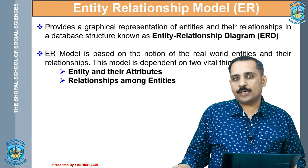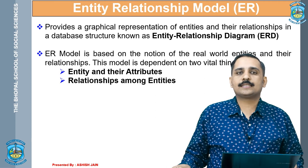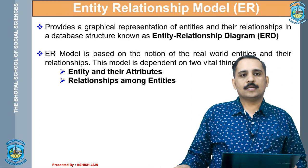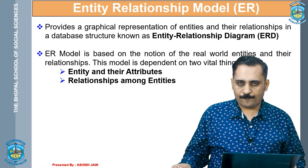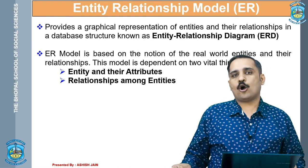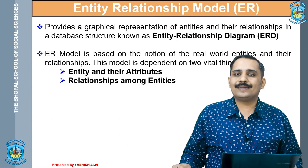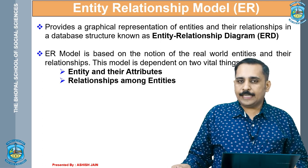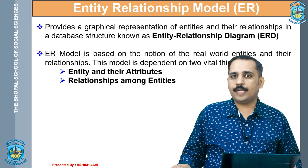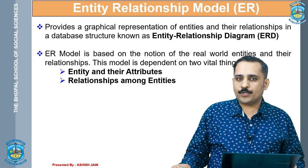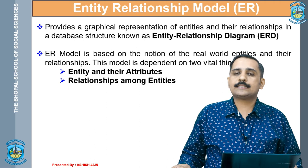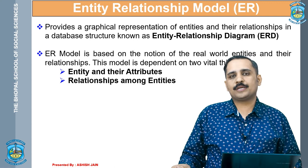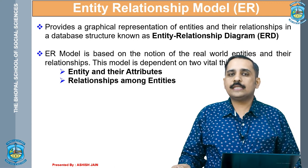A student is not identified by one single value — a student is composed of many values such as enrollment number, name, class, section, and other information. Together they give the detail of one particular student. So we have student as a real world entity. There may be another entity called teacher, identified by an employee number, teacher name, department, and other related information. How do these two entities relate to each other? This is called a relationship. The basic relationship between a teacher and a student is that a teacher teaches a student — so 'teaches' is the relationship.